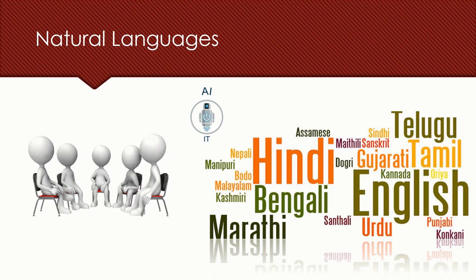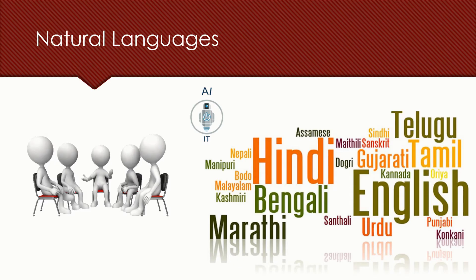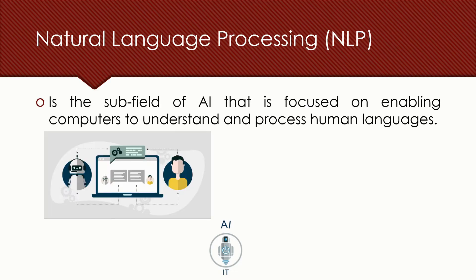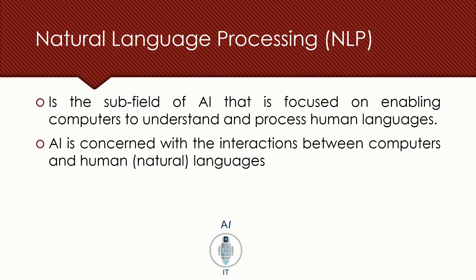In India, we have a lot of languages like Hindi, English, Sanskrit, Telugu, Gujarati, Marathi, Bengali, Tamil etc. Now, what is natural language processing? It is a subfield of artificial intelligence which enables the computers to understand and process these human languages which we call as natural languages.